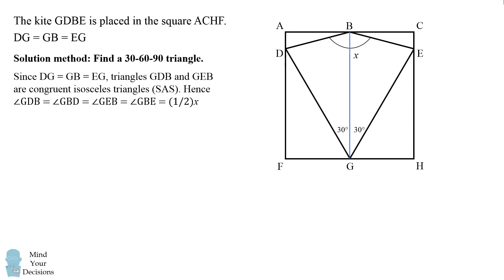Therefore, the remaining angles in these isosceles triangles will be equal to each other. Angle GDB equals angle GBD equals angle GEB, which equals angle GBE. So this means angle X is bisected by this vertical diagonal.